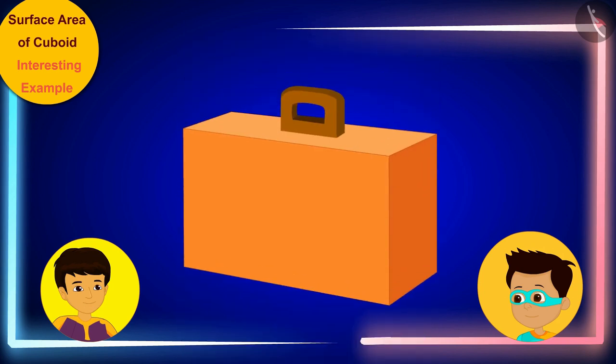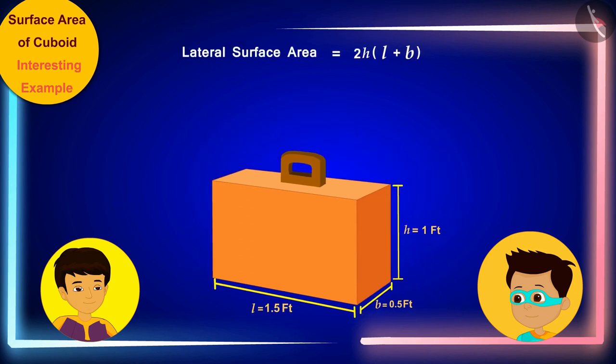The length, width, and height of the suitcase are one and a half feet, half feet, and one feet respectively. Let me write these measurements here instead of l, b, and h. Look Thomas.